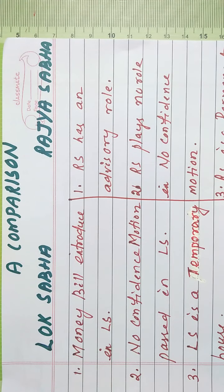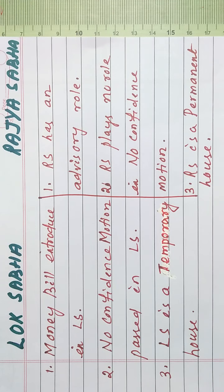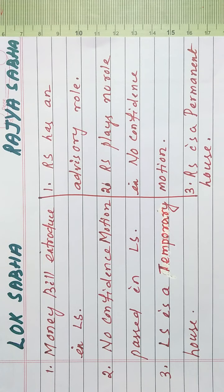Now we will discuss a comparative study between Lok Sabha and Rajya Sabha. A Money Bill is introduced in Lok Sabha, but in Rajya Sabha, it only plays an advisory role. A No Confidence Motion is passed in Lok Sabha, but Rajya Sabha plays no role in a No Confidence Motion.